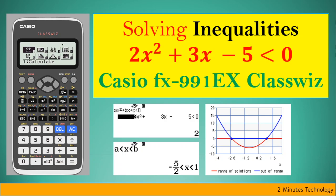Hey guys, today we are going to solve inequalities on the Casio ClassWiz fx-991EX. We have an inequality here: 2x² + 3x - 5 < 0, and we would like to find out possible values of x.